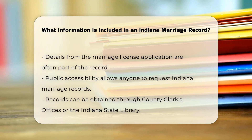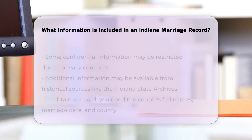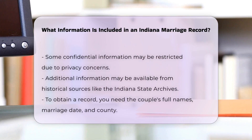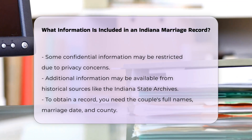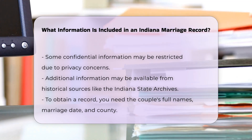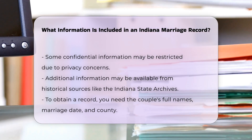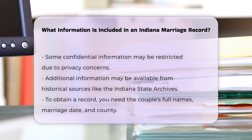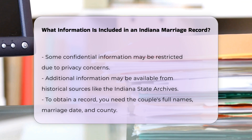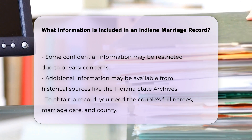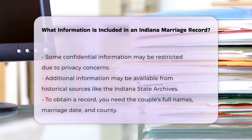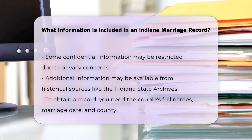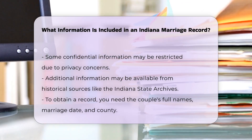Public accessibility. Indiana marriage records are public records, making them accessible to anyone through the county clerk's offices or the Indiana State Library. However, some confidential information may be restricted based on legal guidelines or privacy concerns.